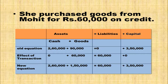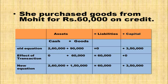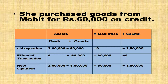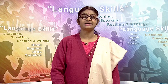Purchase goods from Mohit for rupees 60,000 on credit. It is a credit transaction, so goods are coming inside the business. In the goods column add 60,000. Creditors are increasing, so in the liabilities column open a creditors column and add 60,000. Accounting equation: cash 2,60,000 plus goods 1,50,000 equals liabilities 60,000 plus capital 3,50,000 — that is 4,10,000 on both sides. Accounting equation is satisfied.